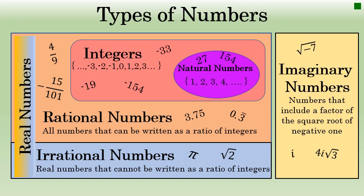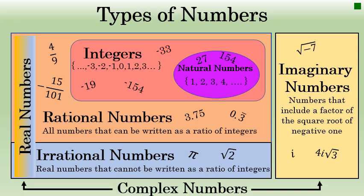Finally, the set of numbers that includes all real numbers and all imaginary numbers are the complex numbers. The set of complex numbers can be described as the real numbers, the imaginary numbers, as well as any sum, difference, product, or quotient of the two.